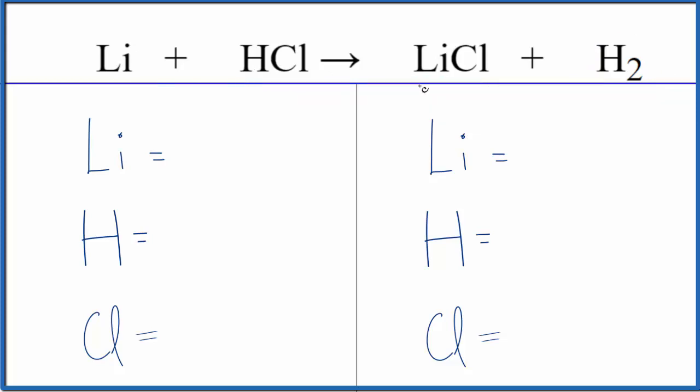To balance this single displacement reaction, count the atoms up. One lithium, one hydrogen, and one chlorine. On the product side, we have one lithium. Hydrogens, we have two of those. And then chlorine, we have one of those.